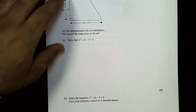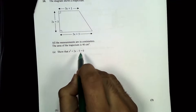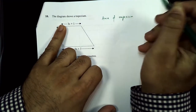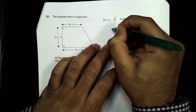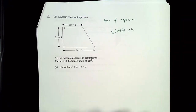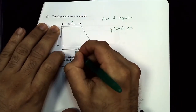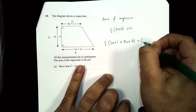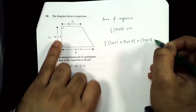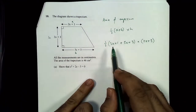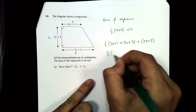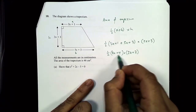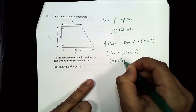Question 10: show that the area of the given trapezium leads to the equation x² + 2x − 5 = 0. Area of a trapezium = ½(a + b) × h. Substituting: a = 3x + 1, b = 5x + 3, h = 2x + 3. So: ½(3x + 1 + 5x + 3)(2x + 3). Collecting the bracket: ½(8x + 4)(2x + 3). Half of that bracket gives (4x + 2).